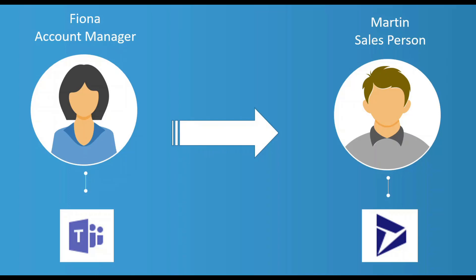Adaptive cards in Teams using Power Automate and creating a record into Dynamics is quite a common concept. In this scenario, we've got Fiona who's an account manager. She's managed to take a phone call from the sales line because all the sales team are quite busy. She then messages Martin and says can you take this call, he says no I can't — please can you take some details down. Instead of writing it down on a bit of paper or putting it into an email where it gets lost, we can use adaptive cards and Power Automate.